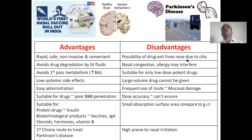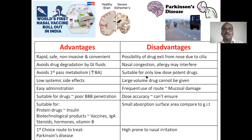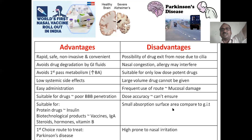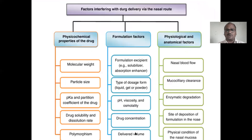Disadvantages: possibility of drug exiting from the nose — you must lie down for at least 10 to 30 minutes so the drug enters effectively. Cilia also try to push the drug out. Nasal congestion and allergy may interfere with therapy. Suitable only for low-dose protein drugs. Frequent use can cause mucosal damage and loss of smell due to olfactory nerve damage. Small absorption surface area compared to GI tract, and high prone to nasal irritation.